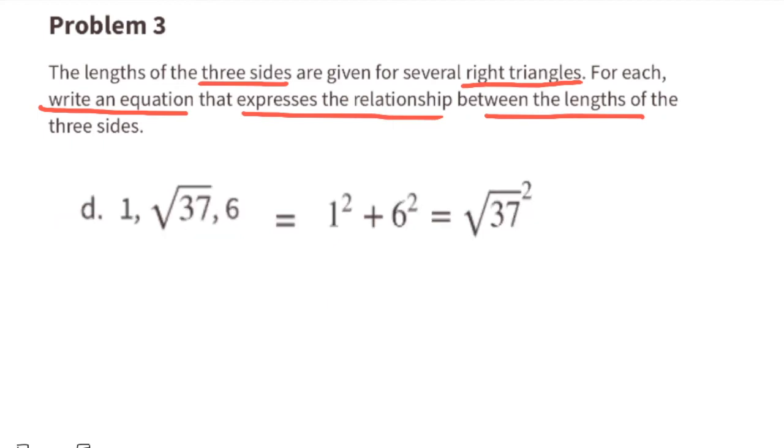D: One squared plus six squared equals the square root of 37 squared. This works because one plus 36 equals 37.